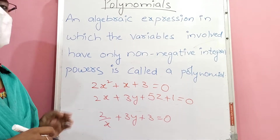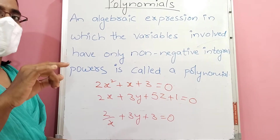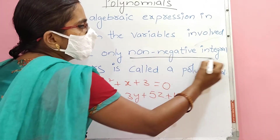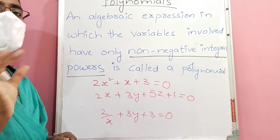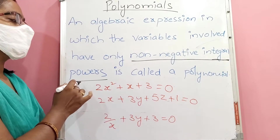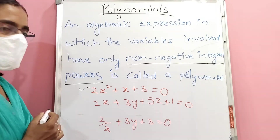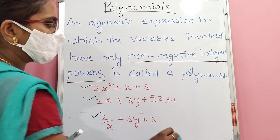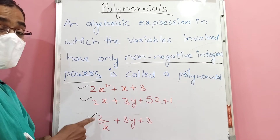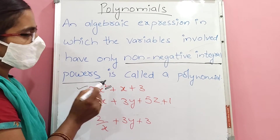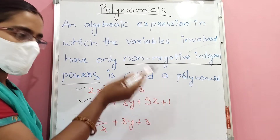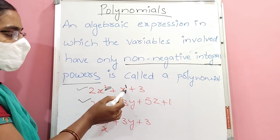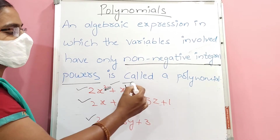So here, polynomials. Polynomial means an algebraic expression. A polynomial is an algebraic expression in which the variables involved have only non-negative integral powers. Non-negative means only positive integers. Then only it is called a polynomial.